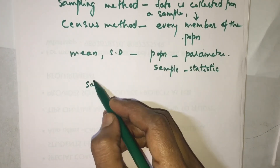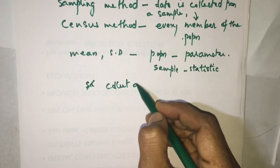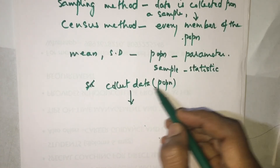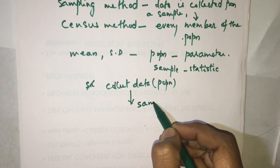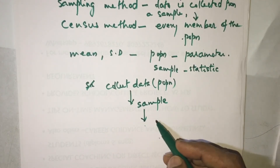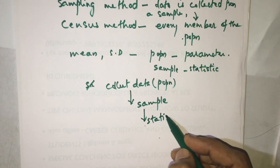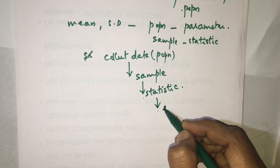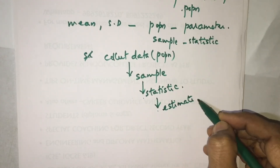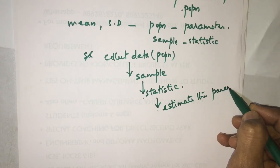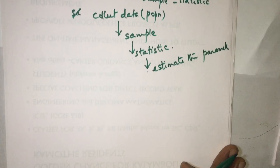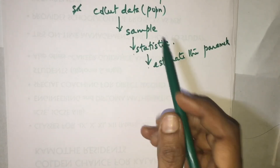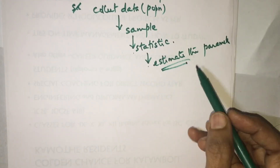Firstly, we collect the data — this is our population. From this population, you consider and take a sample. Then from this sample, you calculate a statistic. From this statistic, we estimate the parameter — meaning the overall average, overall result, or overall specification of the population, we can predict from there.